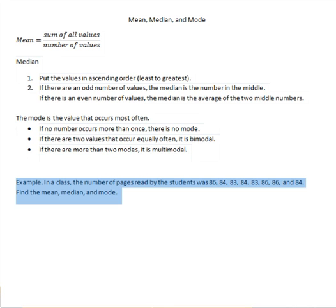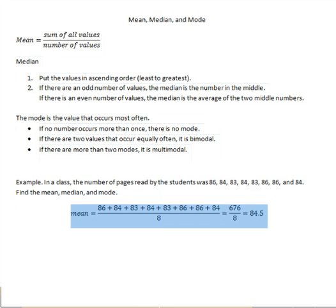To find the mean, we add up all those values and divide by 8 because there are 8 data values. We get 676 divided by 8, which equals 84.5.